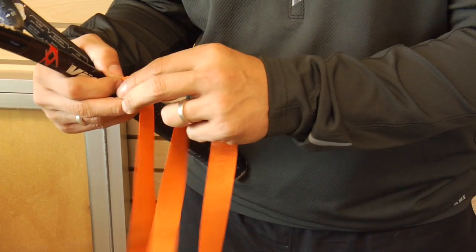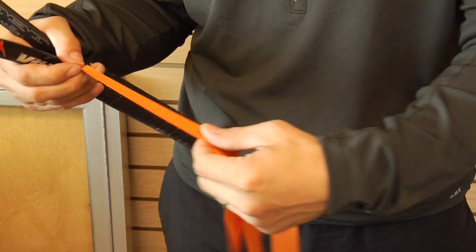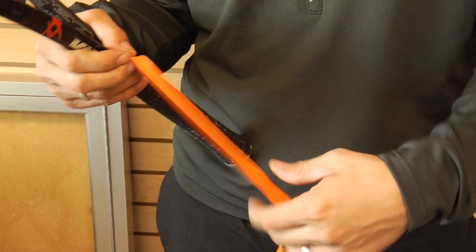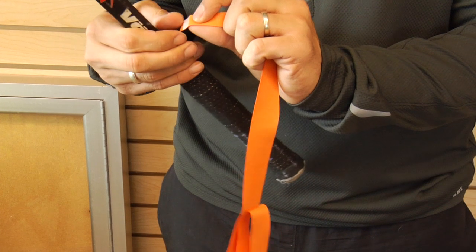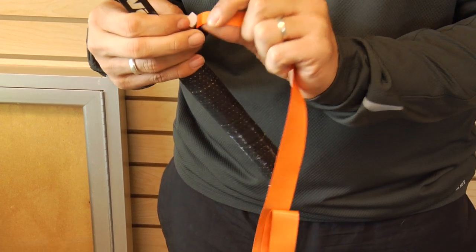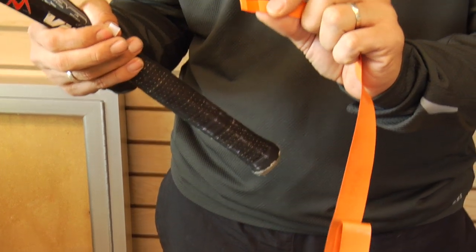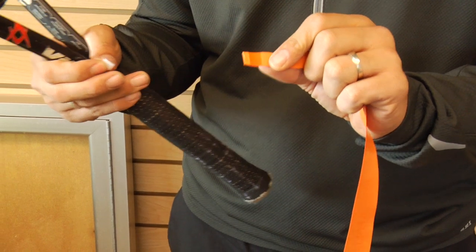Your grip tape is going to have a tapered edge. That's the edge you want to start off on. Occasionally your grips will have a tape at the bottom, at the back end of it. That's to help you start off your gripping.